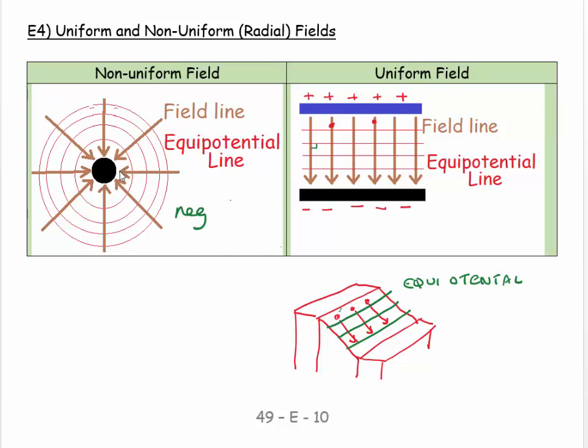We see that the field lines point towards this negative charge. The equipotential lines, it looks like it's circularly symmetrical here but it's a two-dimensional diagram, it's really spherically symmetrical. Notice that the equipotential lines are not evenly spaced. There's a big gap and then a smaller gap and a smaller gap.